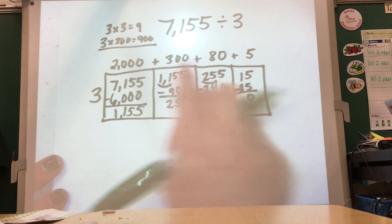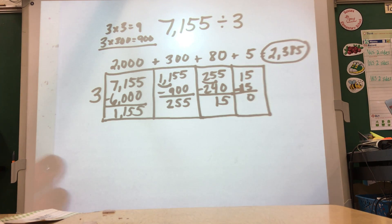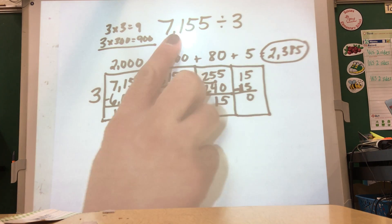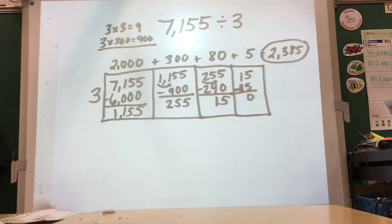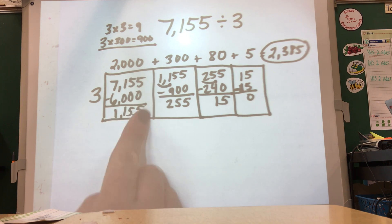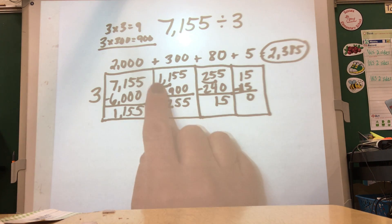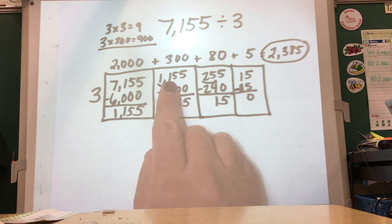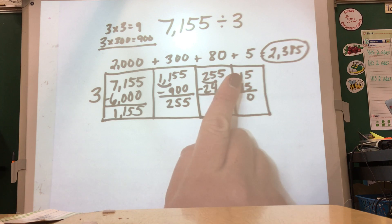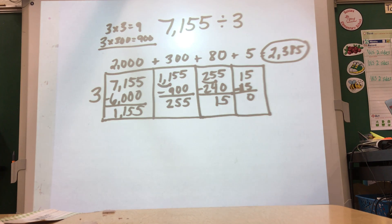My answer is 2,000 plus 300 plus 80 plus 5, or 2,385. It does seem like a lot of work, and it is a complicated problem, but it's very similar to the steps for long division. In long division, you think: how many times does 3 go into 7? It goes in 2 times with 1 left over — same thing here, 3 times 2 is 6, with 1,000 left over. The difference is we're bringing in the whole rest of the number at once instead of only bringing down one digit at a time. You can see we're still asking how many times does 3 go into 11 — really 1,100 — and how many times does 3 go into 25 tens, and finally into 15.